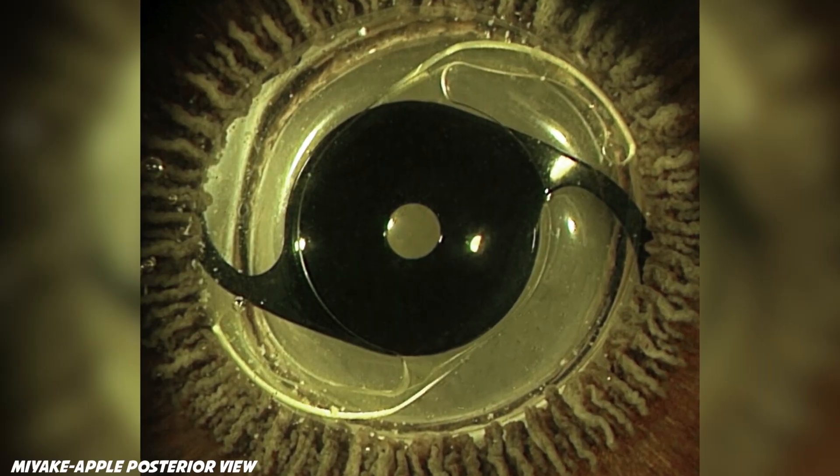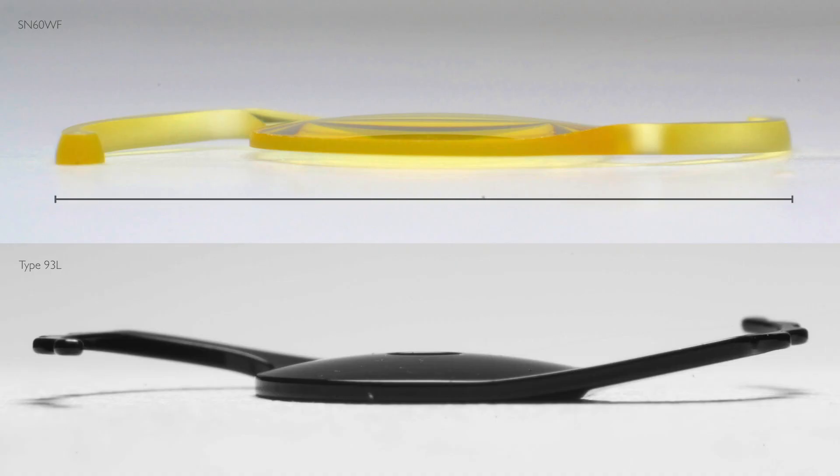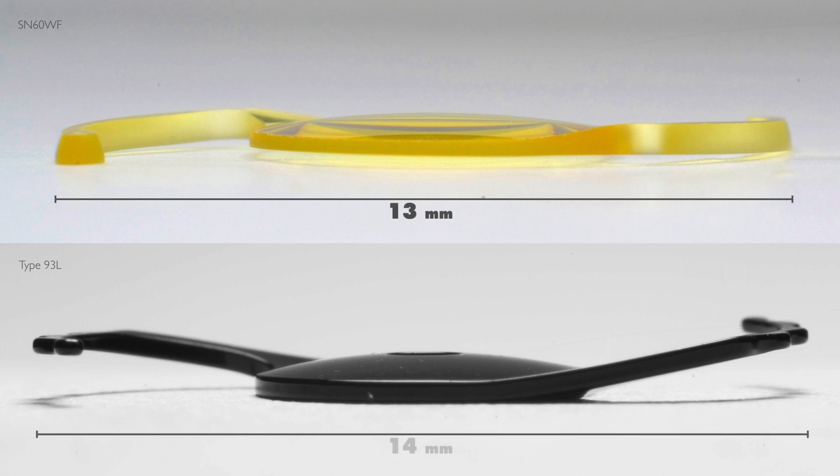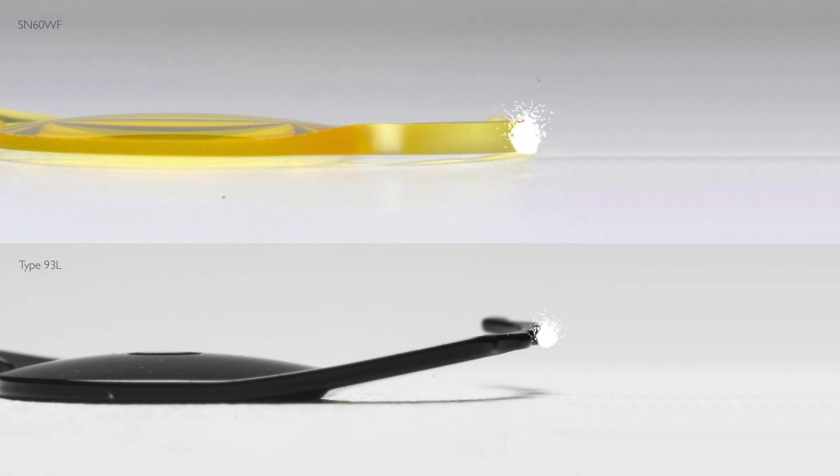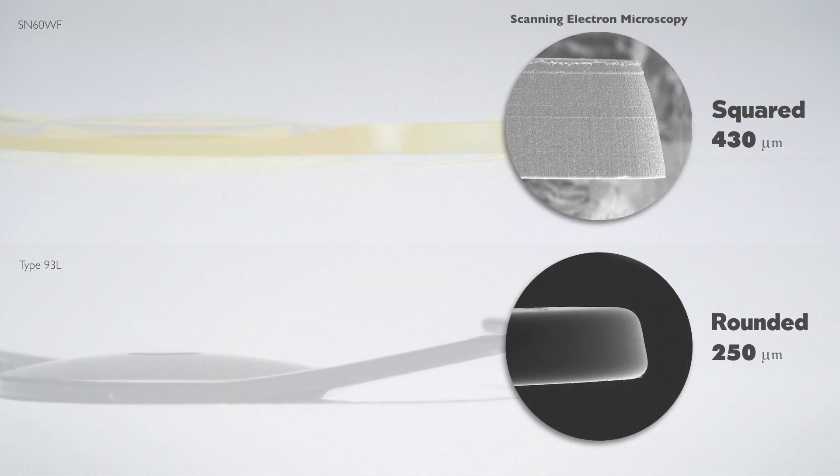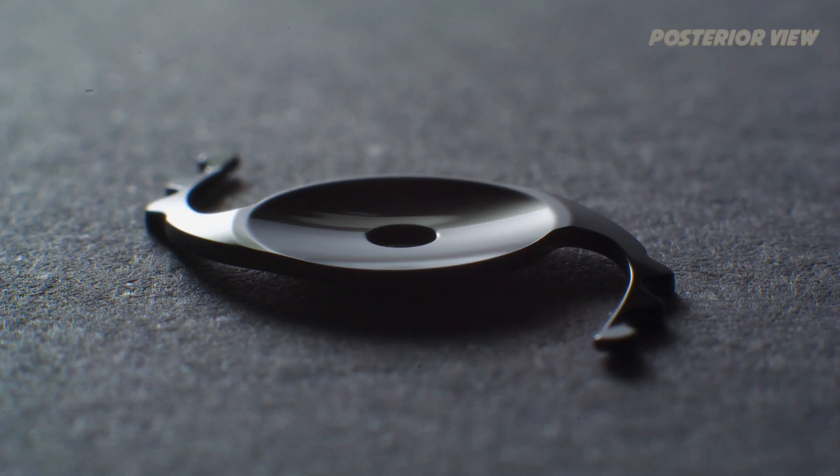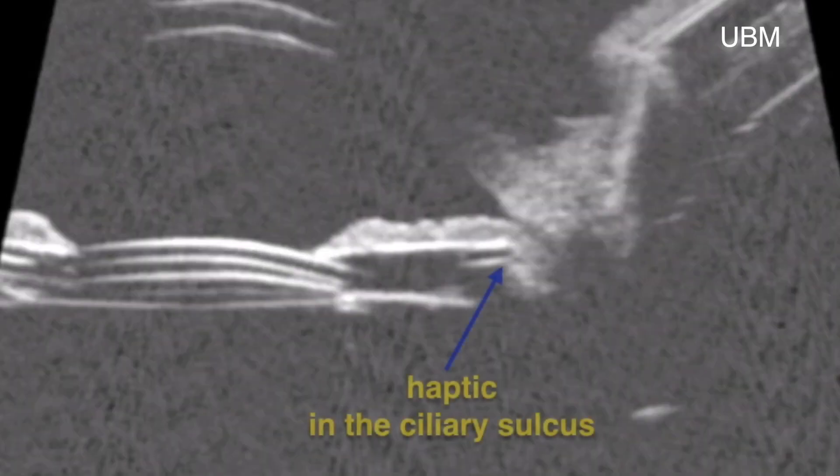So, to avoid such complications, this device has very specific characteristics for sulcus implantation, such as a larger overall diameter, angulated haptics, with a thin, rounded and polished profile. The occlusive portion has a concave-convex design, to avoid contact with the primary IOL.